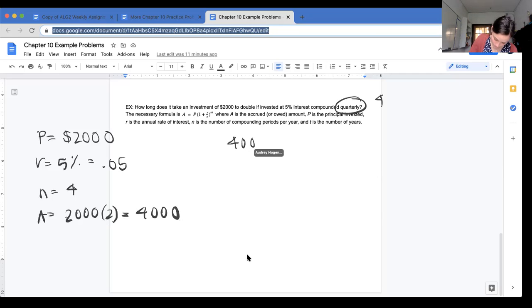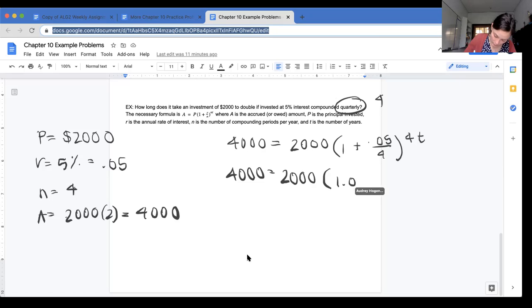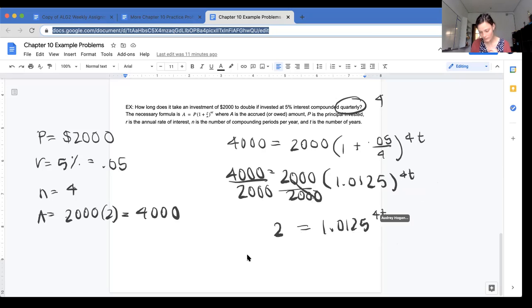So if we plug this all in, we're going to get 4,000 equals 2,000 times one plus 0.05 divided by 4 to the 4t. So I just plug everything into my equation. Now I'm going to do a little bit of simplification. 4,000 equals 2,000 times, I'm going to enter one plus 0.05 divided by 4 in my calculator, and I should get 1.0125 to the 4t. I'm going to divide by that 2,000. So 2 equals 1.0125 to the 4t.